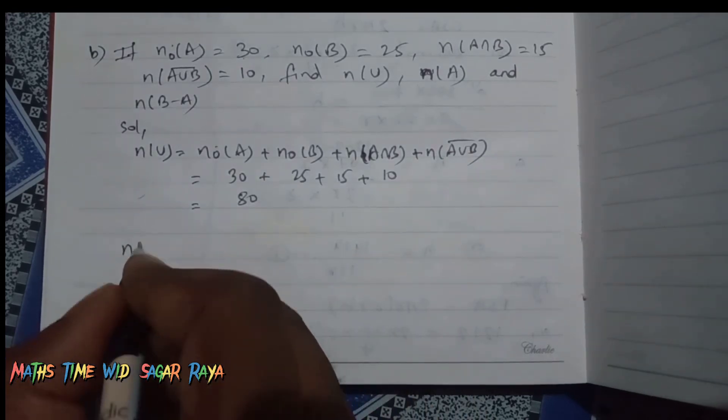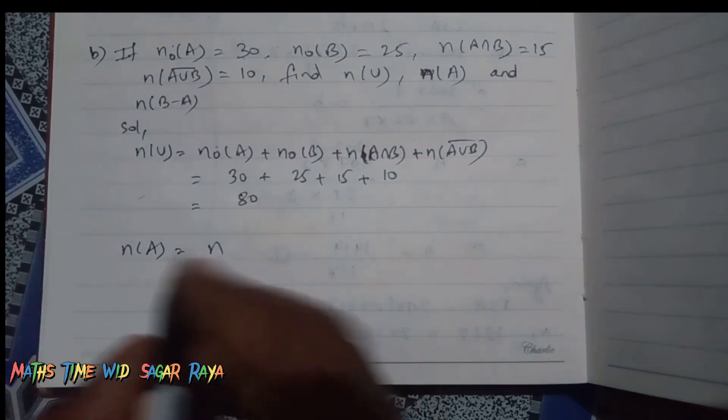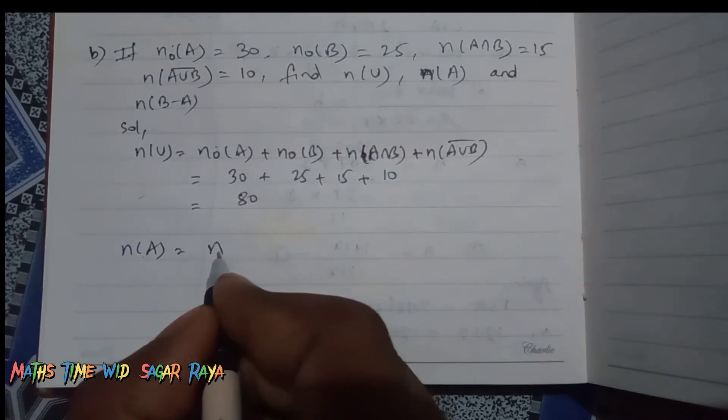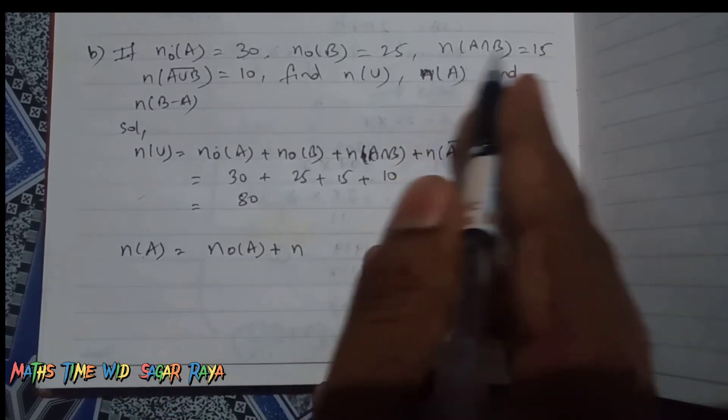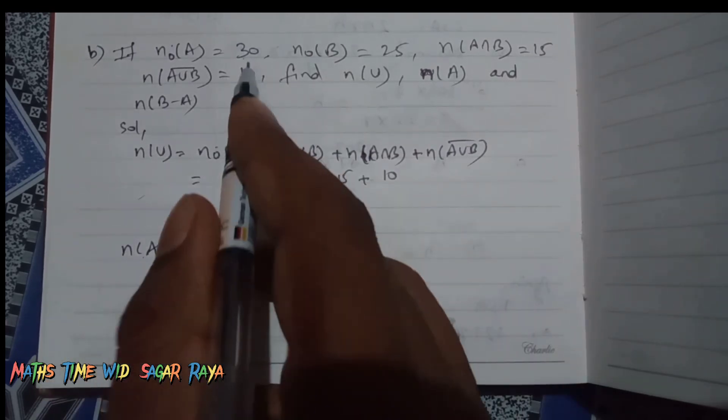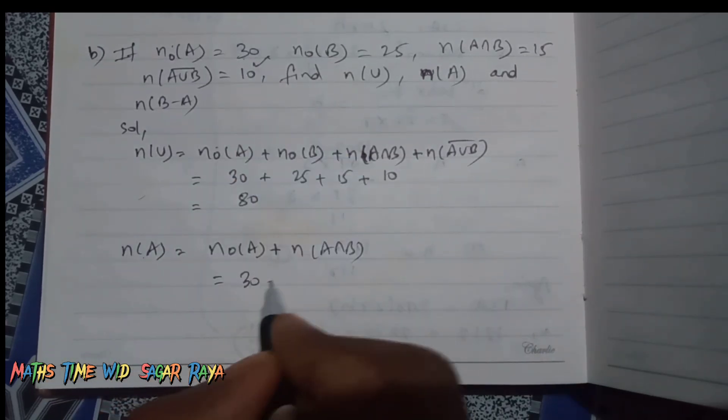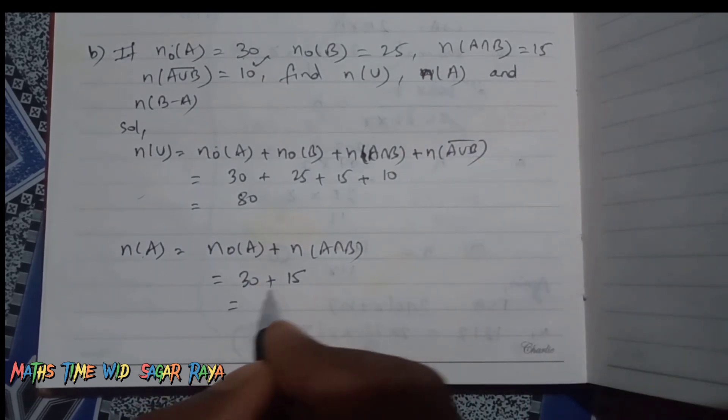And then n(A). So if n(only A) is given, then we can find n(A) by adding n(only A) and n(A∩B). So n(only A) is given here 30, and n(A∩B) is given 15, so 30 plus